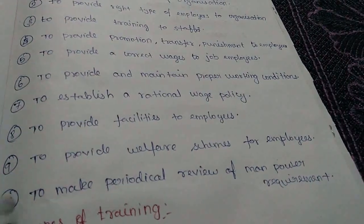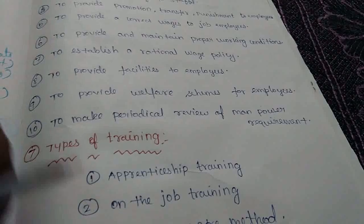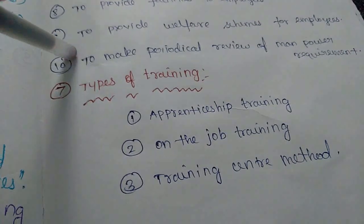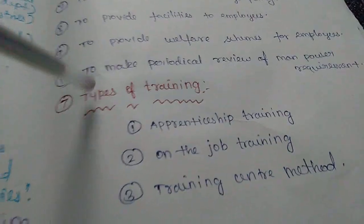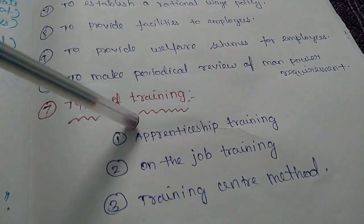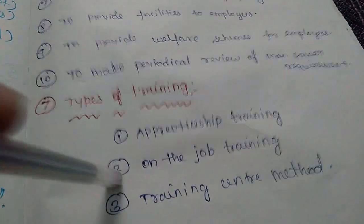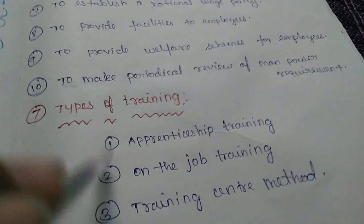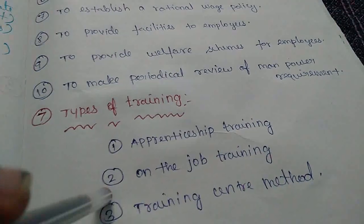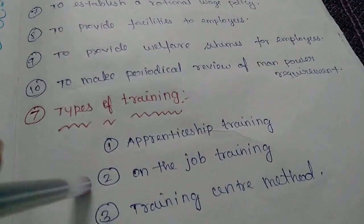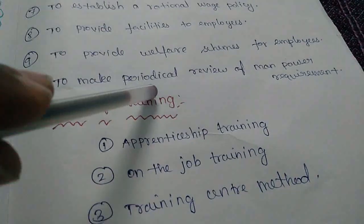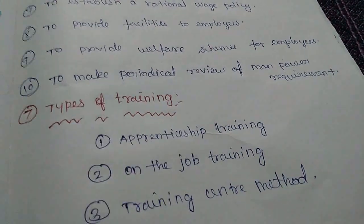Responsibility of Human Resource Management includes manpower planning and training. Types of training: 1. Apprentice training, 2. On-the-job training, 3. Training center method. The training center is built for CNC and CAD skills. You can run your training center using on-the-job training methods.